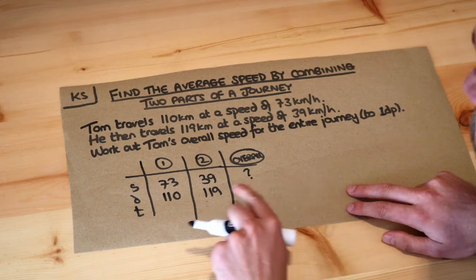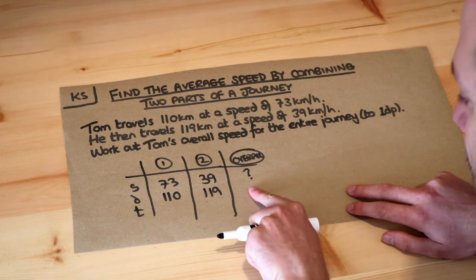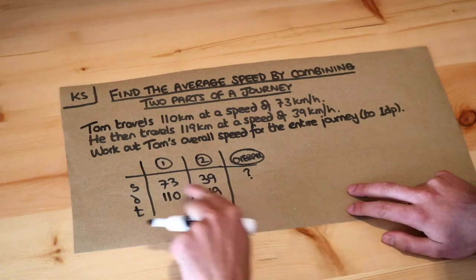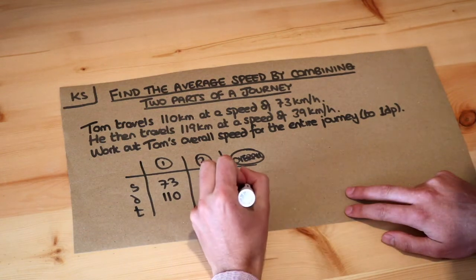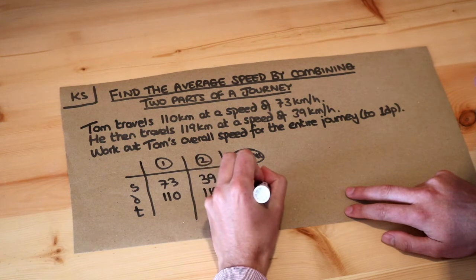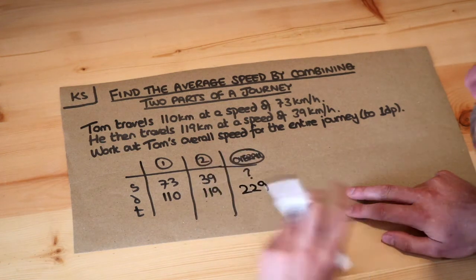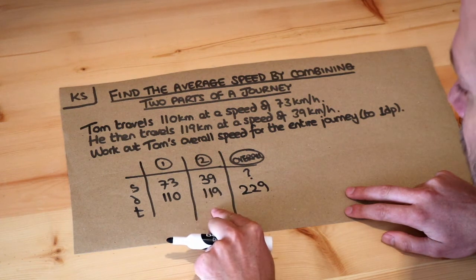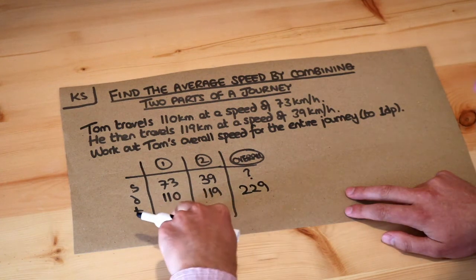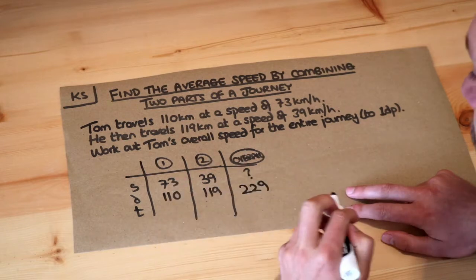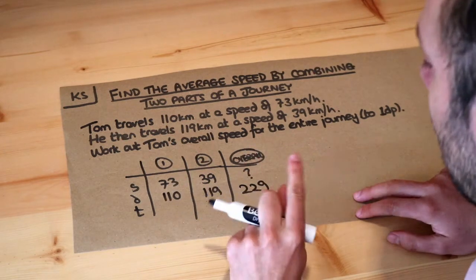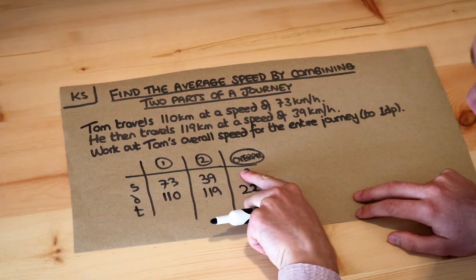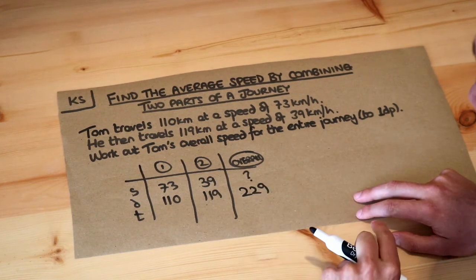Note that we can add the two distances, because the overall distance is just the sum of the distances from the different parts of the journey. Adding those two together gives us 229 kilometers. We can also add the times — however long it took for each part — to get the overall time. The only thing we can't add is the speeds.